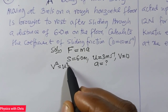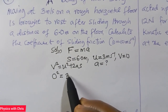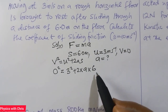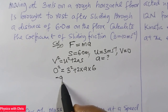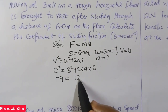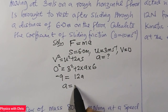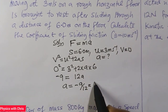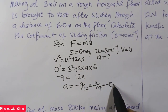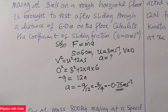V squared equals U squared plus 2AS. My V is zero, so: 0 = 3² + 2 × A × 6. Bringing 9 to the other side gives −9 = 12A, so the acceleration is −9/12 = −3/4, which is −0.75 m/s². This negative acceleration is the deceleration, because negative acceleration is always equal to deceleration.